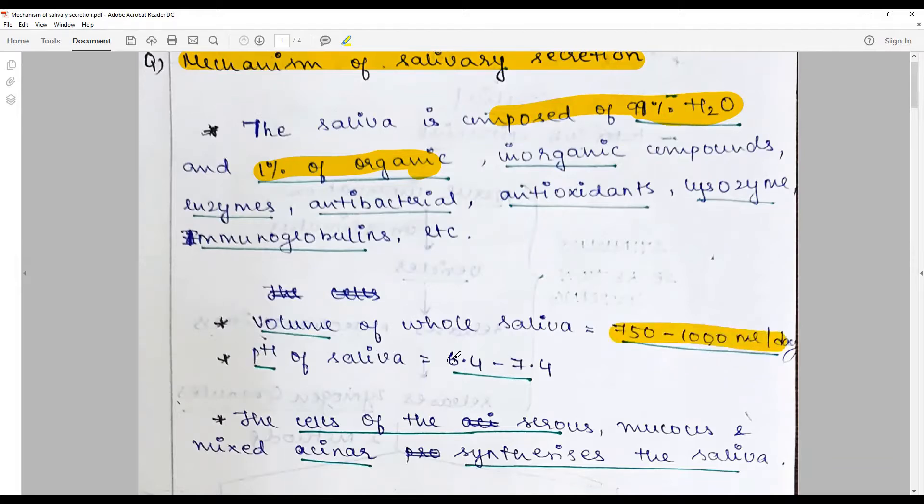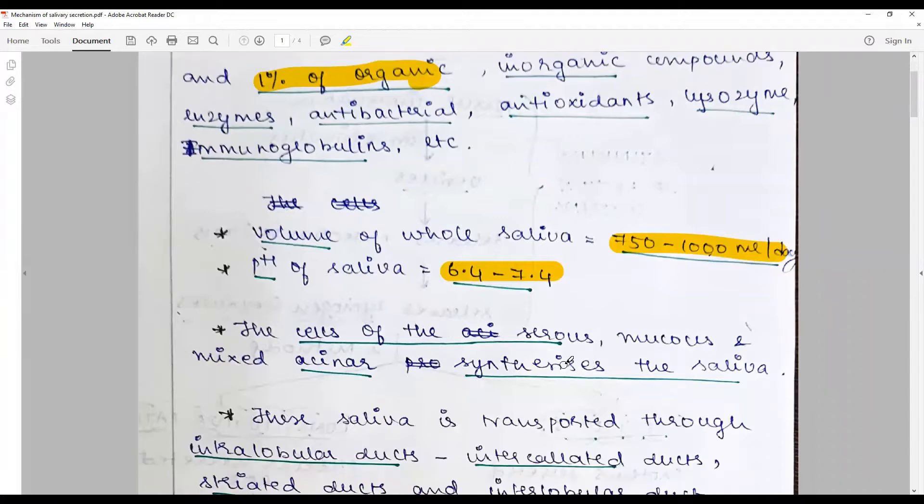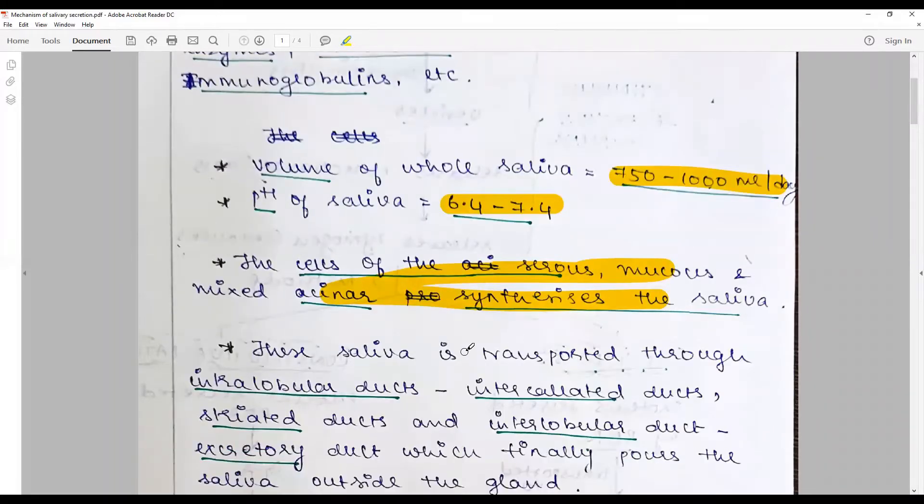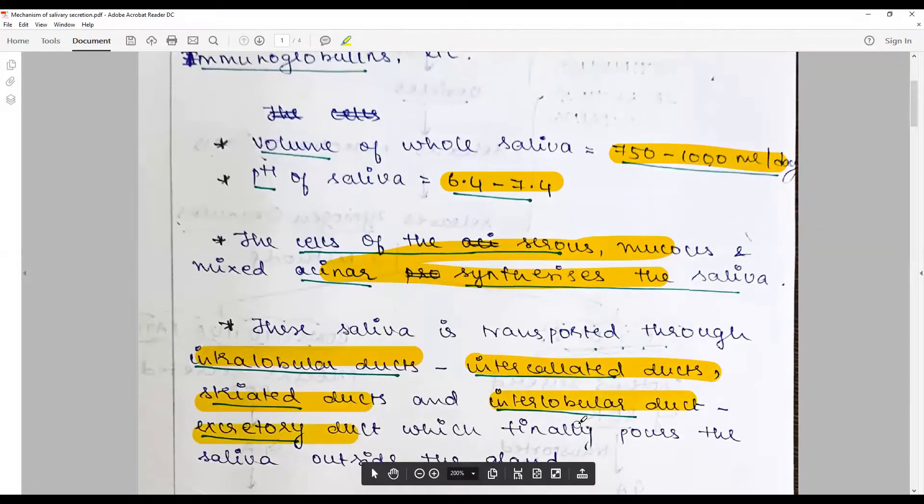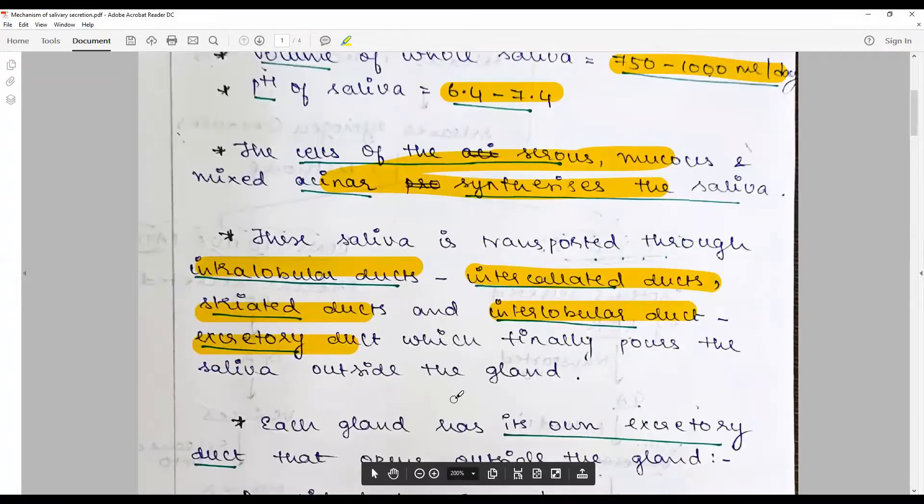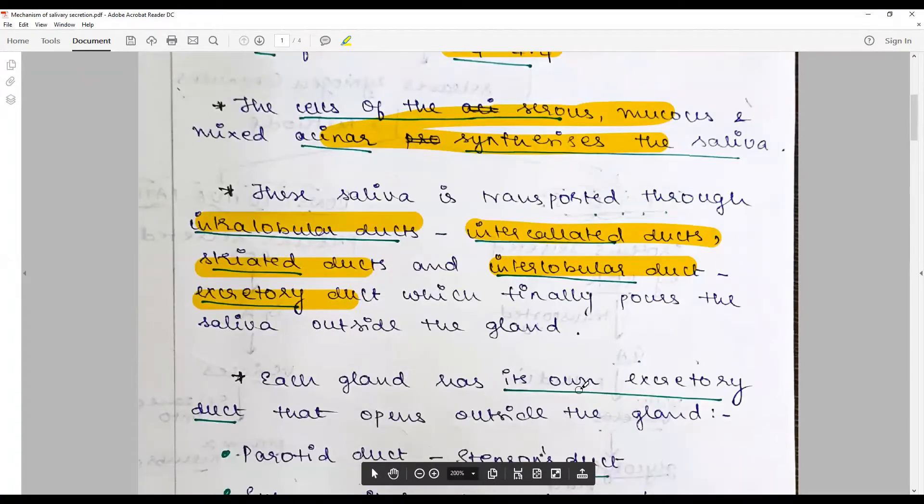The cells responsible for secretion are the serous, mucus, and mixed acinar cells that synthesize the saliva. The saliva is transported through intralobular ducts, namely the intercalated ducts and striated ducts, and interlobular ducts, the excretory duct which finally pours the saliva outside into the gland.